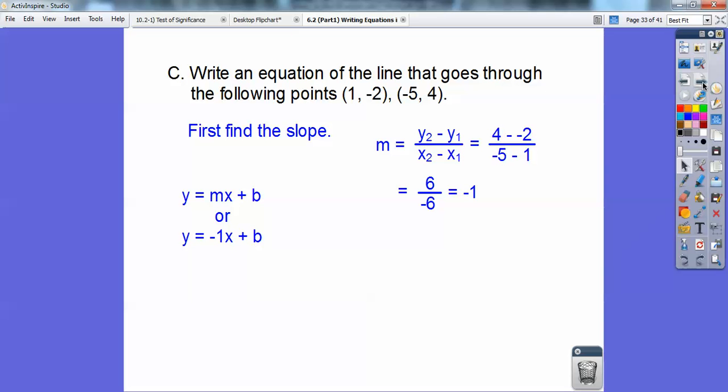So you get y equals negative 1x plus b. And then I'm going to go ahead and substitute in. You can substitute in any points to get b. I chose this one. So I'm going to substitute in. This is y, this is x. So it went in for the y and the x right there. Negative 1 times negative 1 is negative 1. Then you add 1 to both sides. Be careful. Negative 2 plus 1 is negative 1.